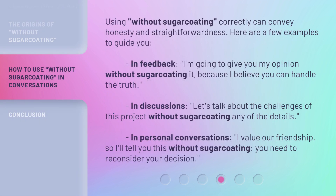Using without sugarcoating correctly can convey honesty and straightforwardness. Here are a few examples to guide you. In feedback: I'm going to give you my opinion without sugarcoating it, because I believe you can handle the truth. In discussions: let's talk about the challenges of this project without sugarcoating any of the details. In personal conversations: I value our friendship, so I'll tell you this without sugarcoating — you need to reconsider your decision.